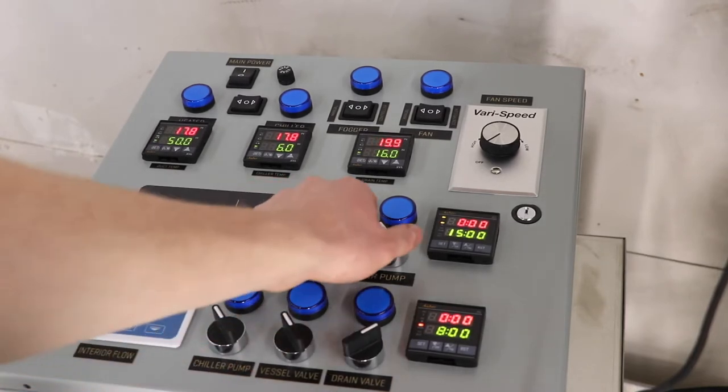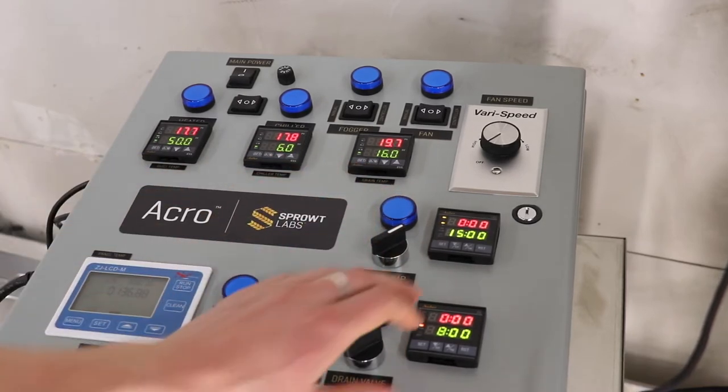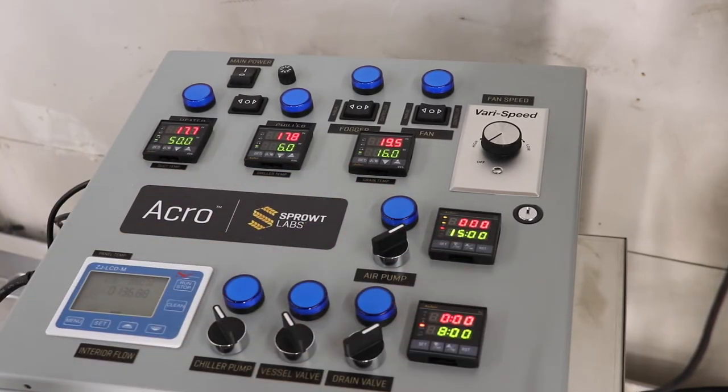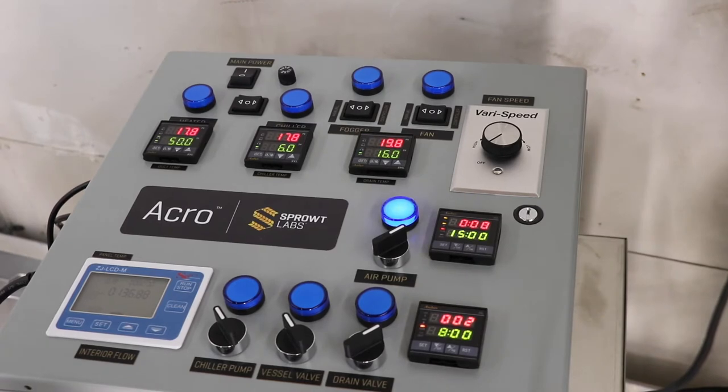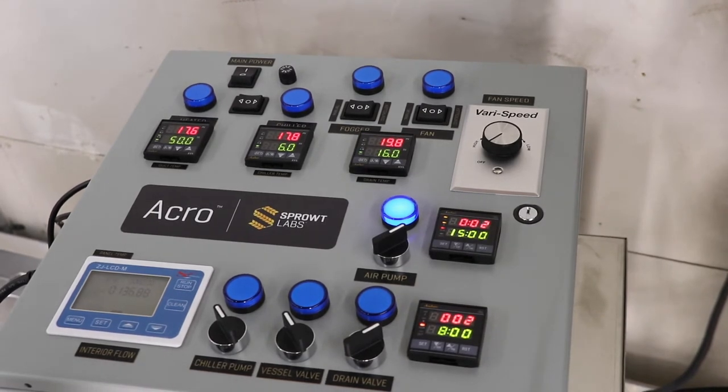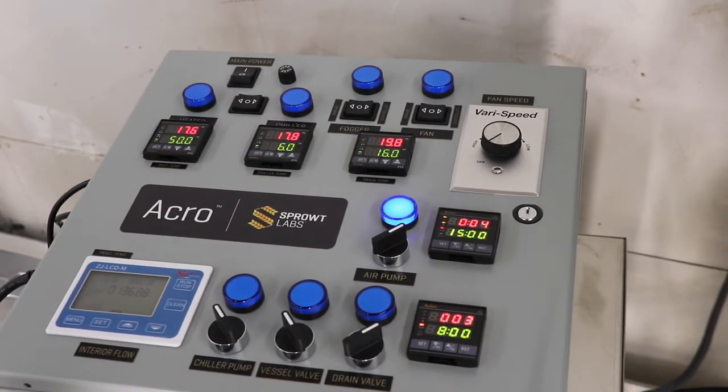Meanwhile throughout the steep, acro oxygenates the water with an air pump which you can set to turn on at different intervals. I simply turn the knob for the air pump and press reset on the controller to start the 15 minute on, 30 minutes total on-off cycle.